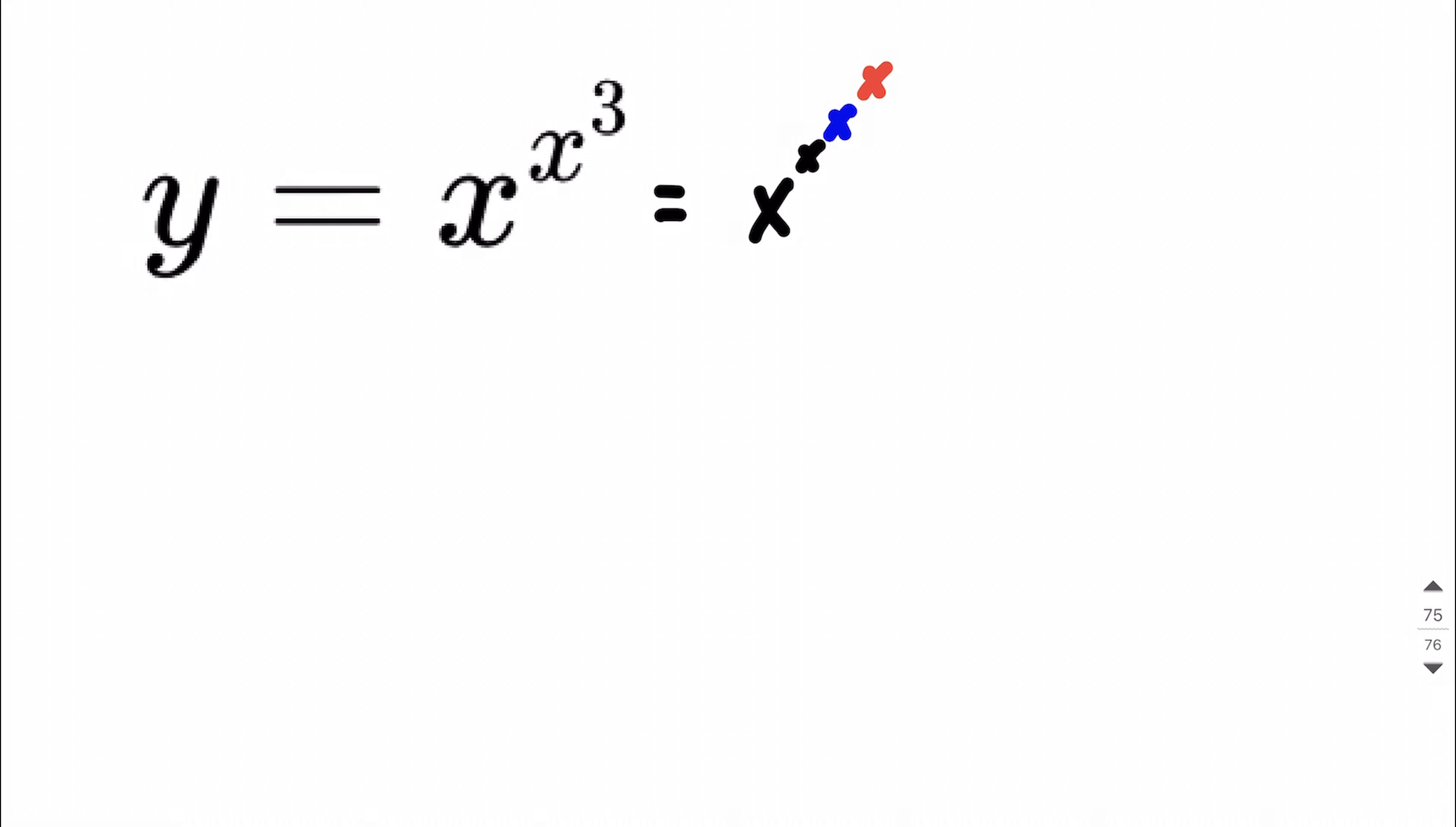that is equivalent to what we have going on in our given example, how it's written. And why that is, is because of our rules for combining exponents together.